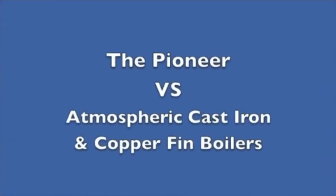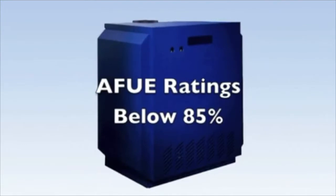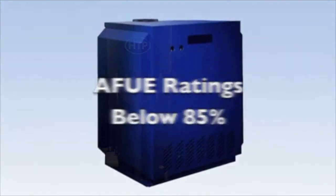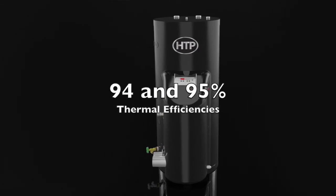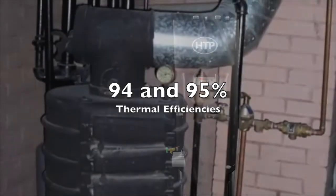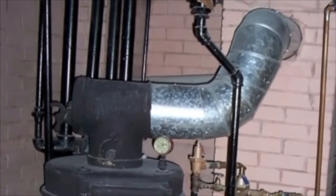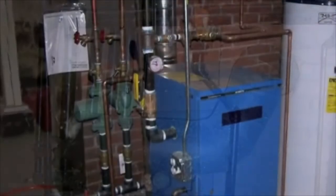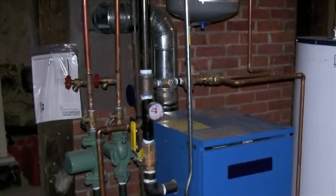The Pioneer versus atmospheric cast iron and copper fin boilers: atmospheric boilers have AFUE ratings below 85% compared to the Pioneer with system efficiencies of 94%. Atmospheric boilers are rated as vent category one appliances and require type B vent materials or lime chimneys. Although the cost of these boilers is less, the venting is expensive and labor intensive compared to the category four PVC venting of the Pioneer.